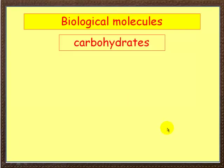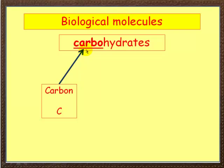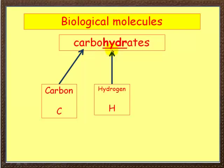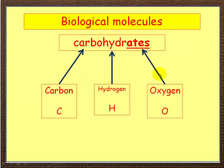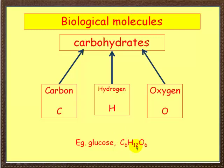First of all, carbohydrates. As the name suggests, let's break this name down. The 'carbo' bit means carbon. The 'hydr' bit means hydrogen. And 'ate', in any biological or chemical molecule, if you see the ending 'ate', it means there's oxygen present. So in a carbohydrate we've got carbon, hydrogen and oxygen. An example is glucose, which has got six carbons, twelve hydrogens and six oxygens.